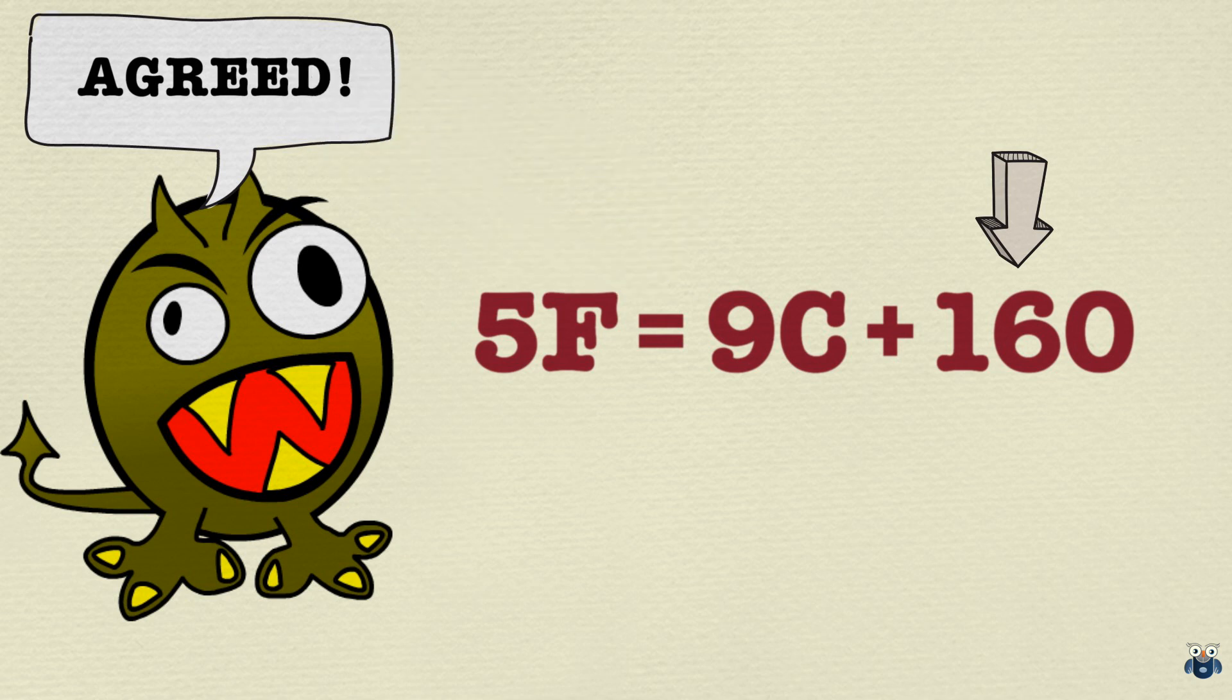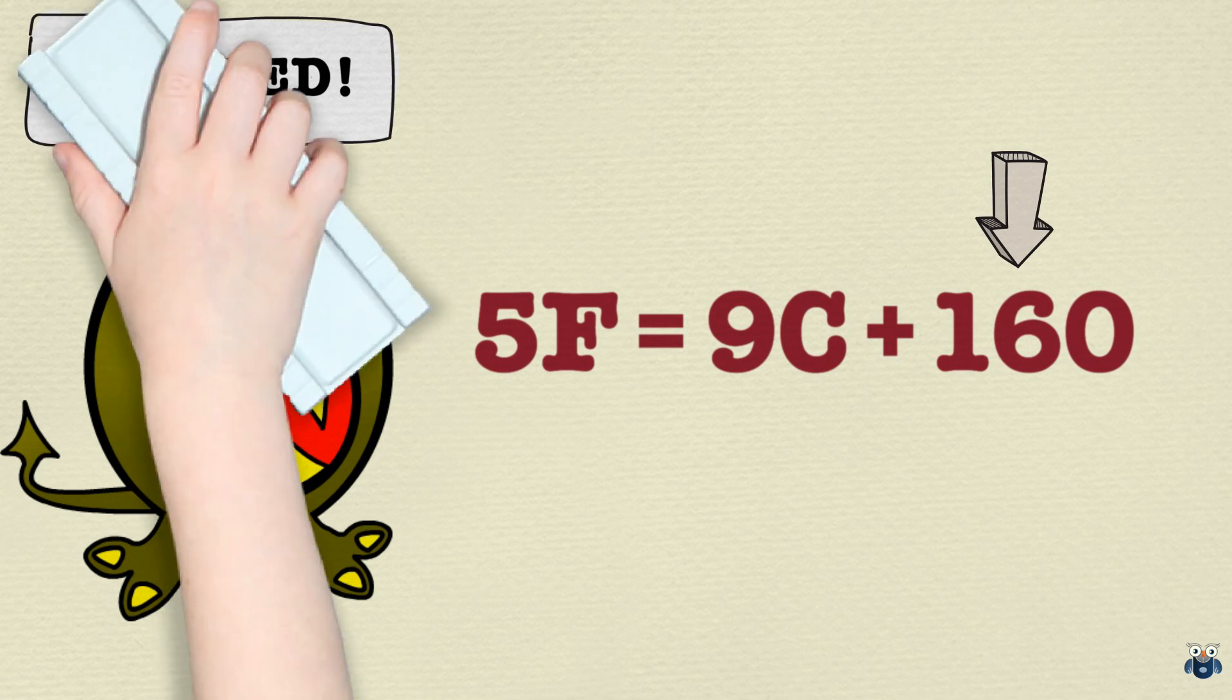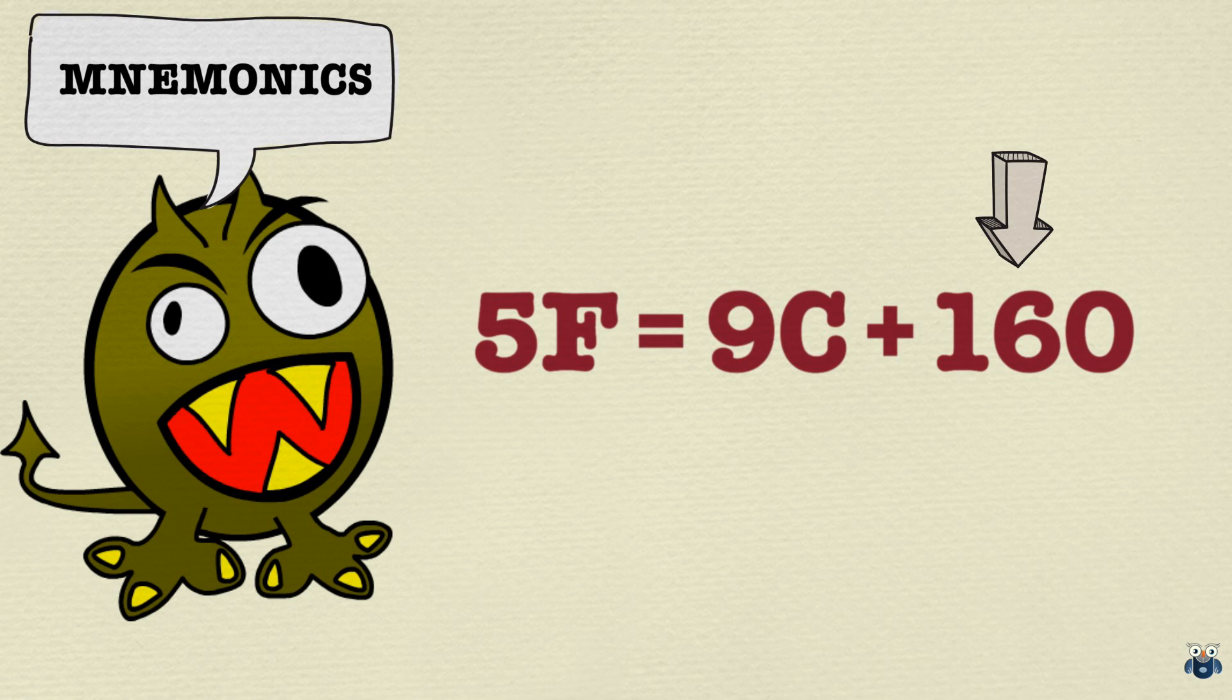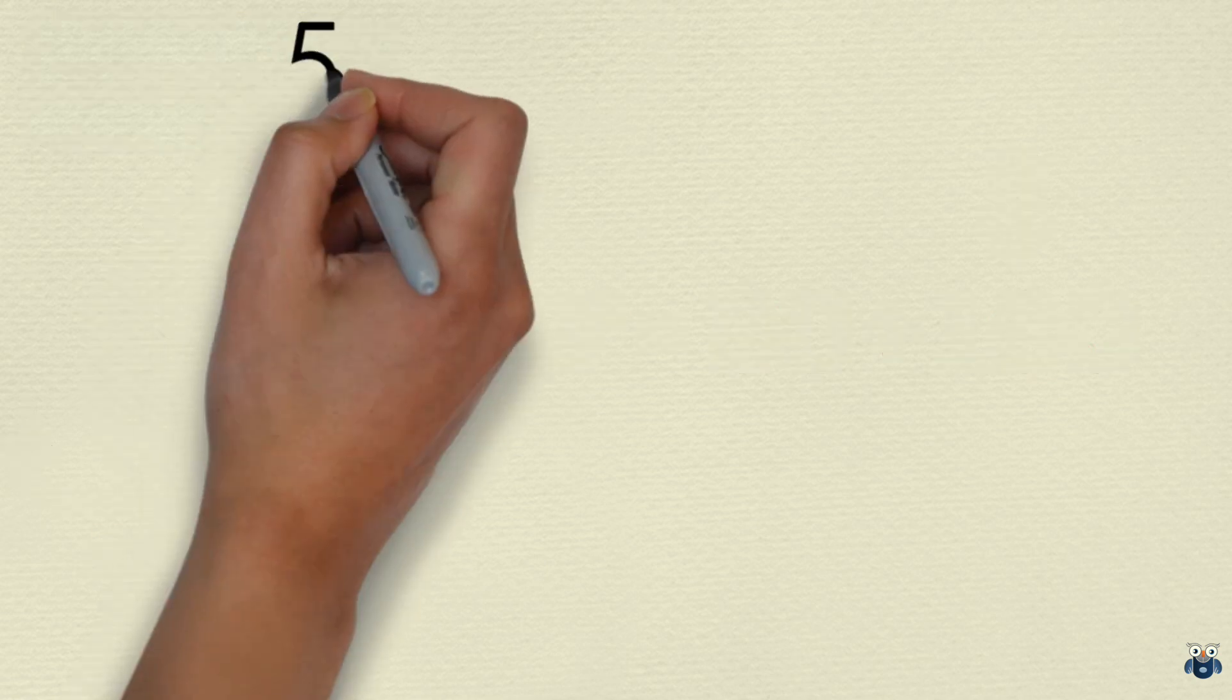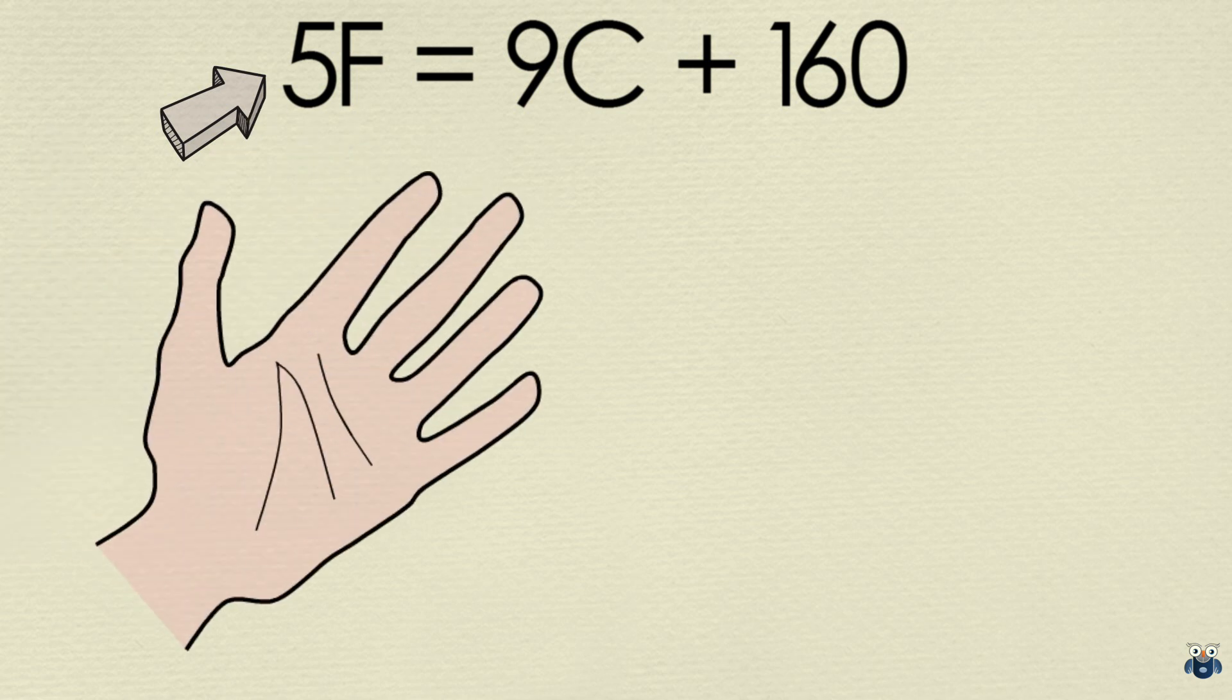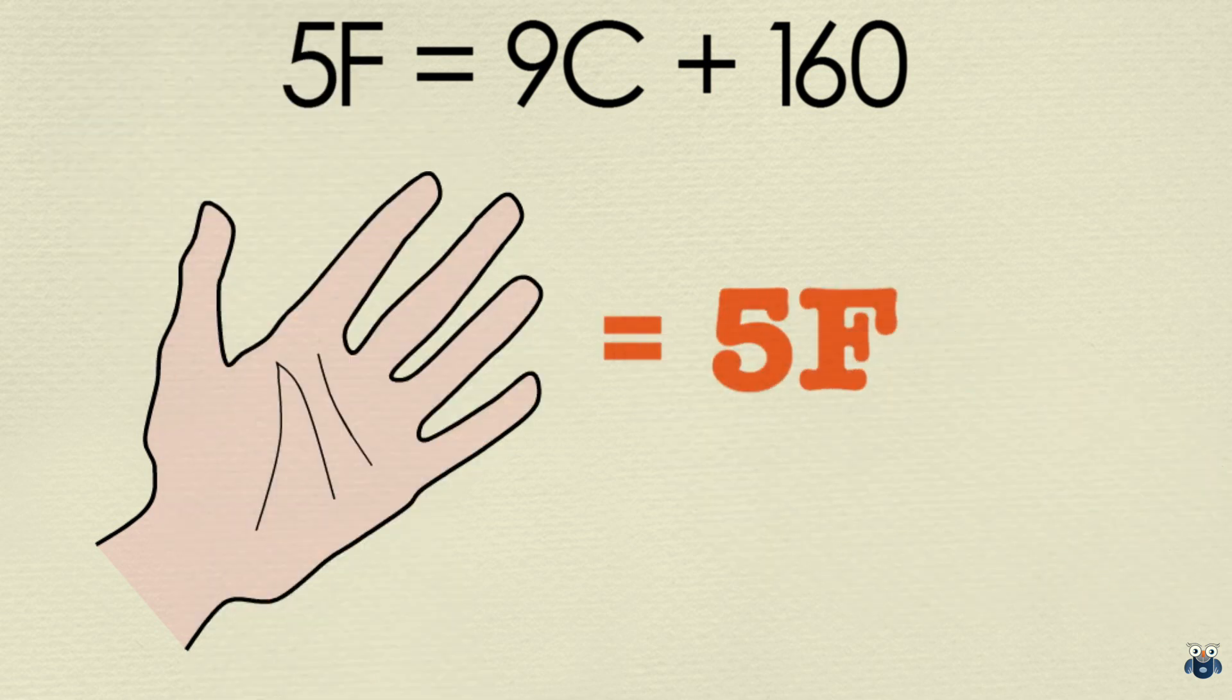Hey, wait a minute. Not so fast. Now we will add a couple of mnemonics so that this formula is even easier to remember. Let's first take 5F and attach an image with it. We have five fingers on our hand, right? So look at 5F and create an image of a palm with five fingers in your mind. Cool!